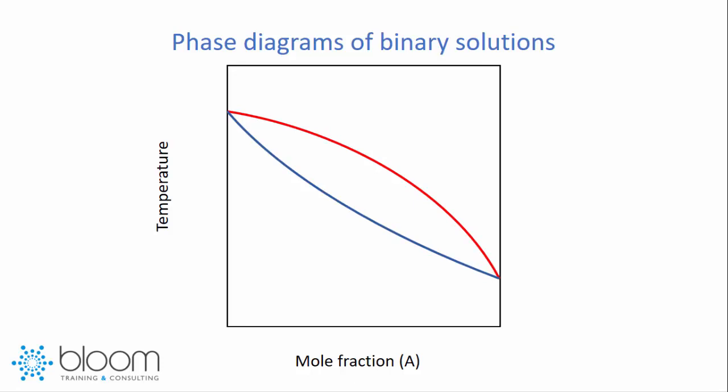Notice that the curves divide the graph into three distinct regions. The lowermost blue region corresponds to the points where the system was composed of only one liquid phase. Similarly, the uppermost red region corresponds to the points where the system is composed of one single vapor phase. The middle region corresponded to the points where liquid and vapor phases coexisted.